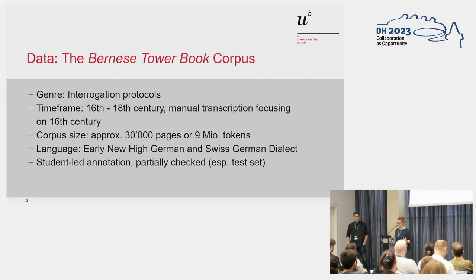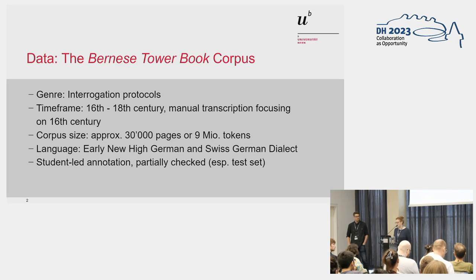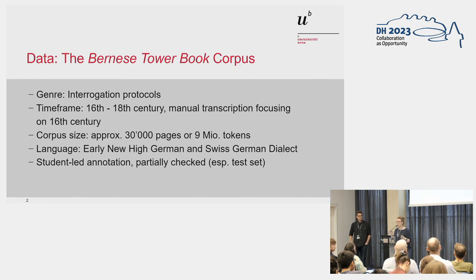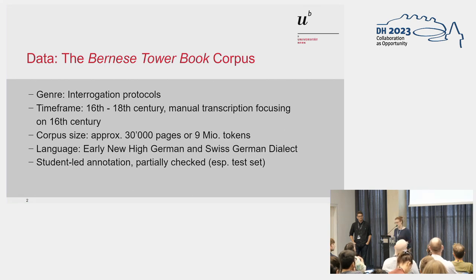The time frame: the collection starts in the 16th century and lasts until the late 18th century. We then started doing transcriptions, and we have manual transcriptions that focus on the 16th century. The corpus size — and that's only what we are actually working with — is about 30,000 pages or more or less 9 million tokens. The real size of the corpus is much bigger; that's just what we have managed to digitize so far.